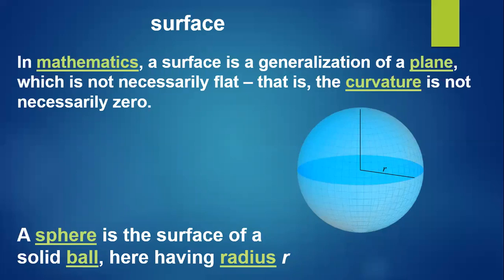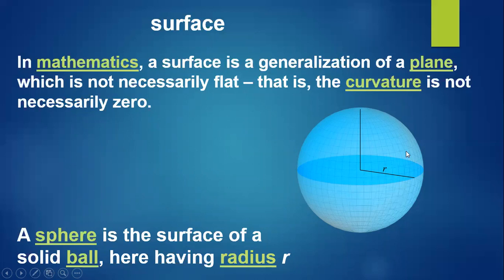The next topic is surface. In mathematics, a surface is a generalization of a plane which is not necessarily flat — that is, the curvature is not necessarily zero. Curvature is the rate of bend of a surface. For example, a sphere is a surface of a solid ball having radius R.